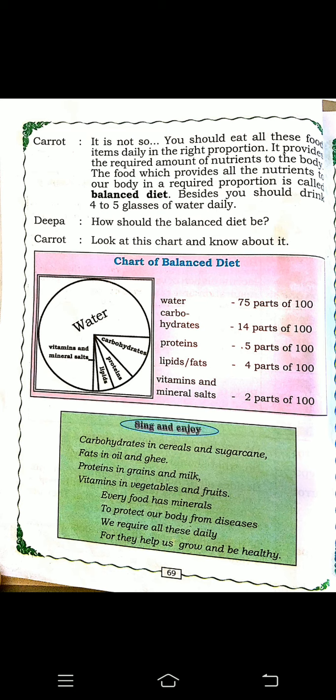Deepa is asking carrot how the balanced diet should be. Carrot says they have given a chart of balanced diet in the textbook. Water must be 175 parts in the body. Carbohydrates should be 14 parts out of 100. Proteins should be 5 parts out of 100. Fats should be 4 parts. Vitamins and mineral salts should be 2 parts out of 100.